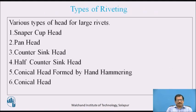Types of Riveting — various types of head for large rivets used are: snapper cup head, pan head, countersink head, half countersink head, conical head formed by hand hammering, and conical head.